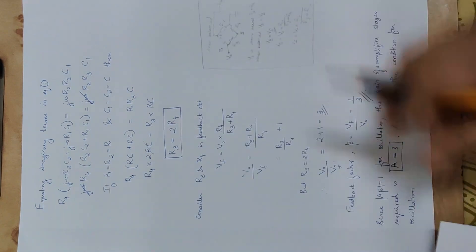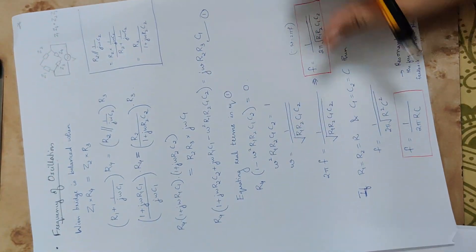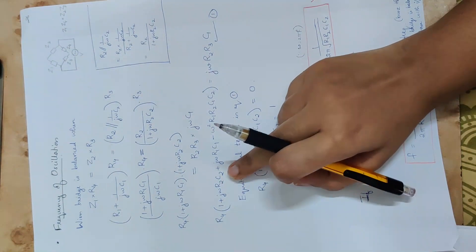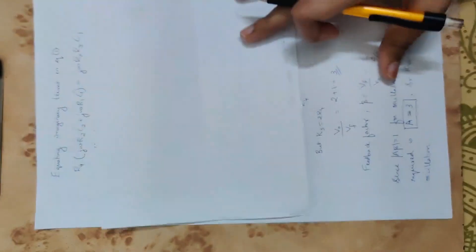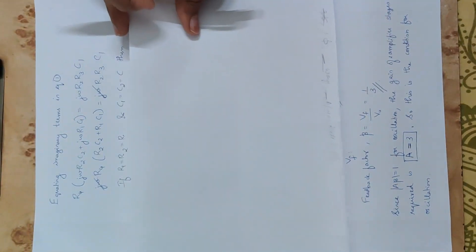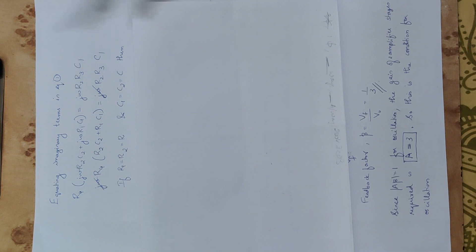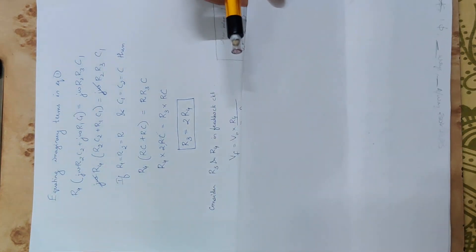Equating imaginary terms: after cancelling jω and simplifying with R1 = R2 and C1 = C2, we obtain the condition R3 = 2R4.